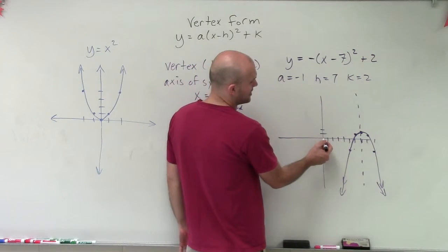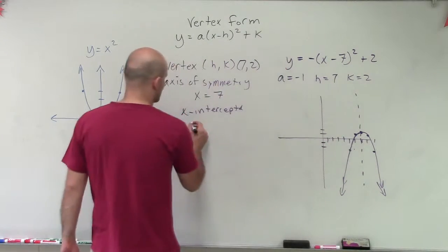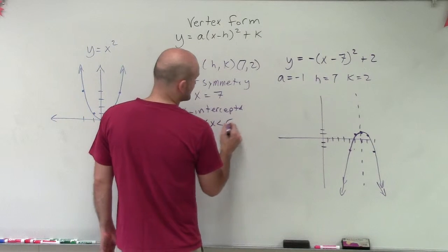We can see that it's going to be between 1, 2, 3, 4, 5. So 5 and 6. So you could say 5 is less than x, which is less than 6.